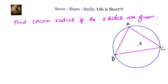We need to find the circumradius if the three sides of a triangle are given. We have triangle ABC and we know the values of the three sides. The concept we are going to use to find the circumradius involves Heron's formula.